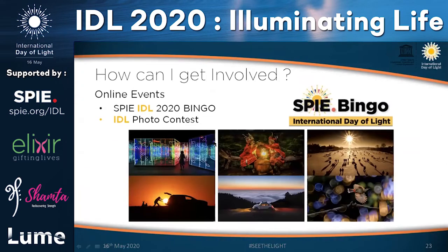How can one get involved with IDL? SPIE has some online events including a photo contest, which is very renowned — you get prizes worth $2,500 and just have to submit a photo showing uses of light. There is also a new competition called SPIE IDL 2020 Bingo, which you can find on the SPIE and IDL websites.